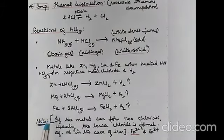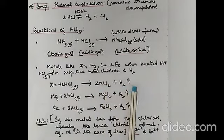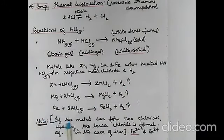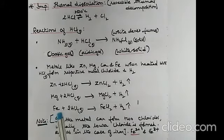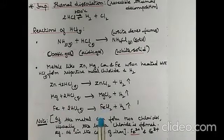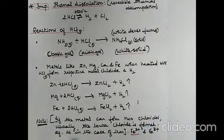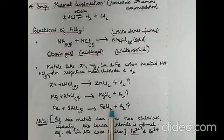Zinc reacts with HCl gas to give zinc chloride and hydrogen gas. Magnesium reacts with HCl gas to give magnesium chloride and hydrogen. Iron reacts with HCl gas to form iron(II) chloride (FeCl₂) and hydrogen. Iron has variable valency (2+ and 3+), but when a metal with variable valency reacts with hydrochloric acid or HCl gas, the lower chloride is always formed. Note: though iron can form FeCl₂ and FeCl₃, the product here is FeCl₂ — this is very important to remember.